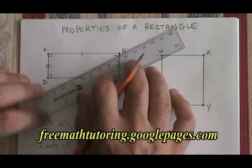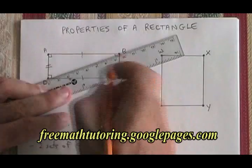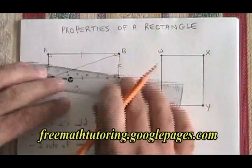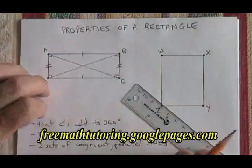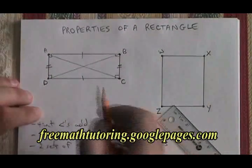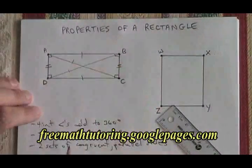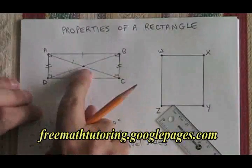The diagonals of the rectangle, which I will draw now, are not perpendicular, but they are congruent and they intersect at the midpoints. So this is a midpoint.